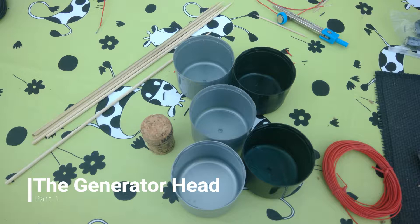Okay, so the very first thing that we're going to be doing is building the head of the generator. This is a really simple design and as a result all we're going to need is one cork, five spray paint can lids, and five wooden skewer sticks.